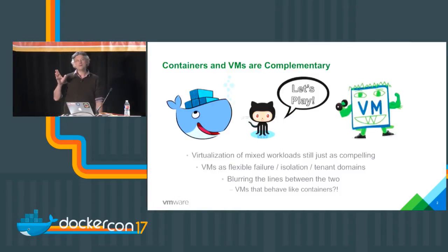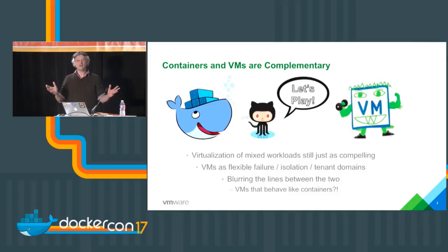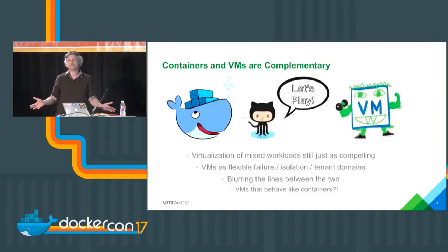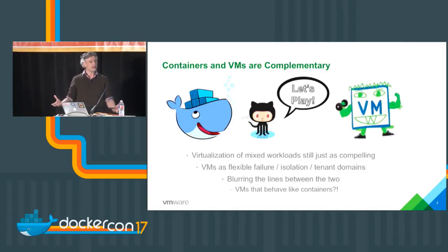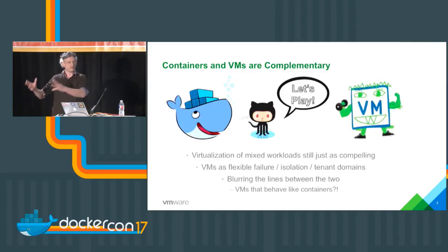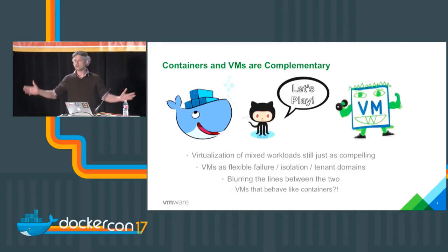If you were at DockerCon a year or two years ago, you may have gone to some presentations like 'containers versus VMs — which is better?' The conversation has really moved on from that. People have realized that containers and VMs are fundamentally complementary technologies, and that's what we've always believed at VMware. VMs are excellent tenant domains, naturally failure domains, isolation domains — they work great. Our customers can virtualize anything: Windows desktops, analytics workloads — everything in one big pool of resource — and they want their container workloads to be just another workload that integrates with all of that.